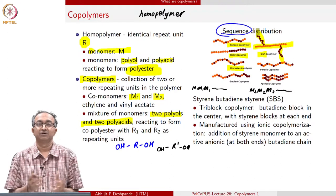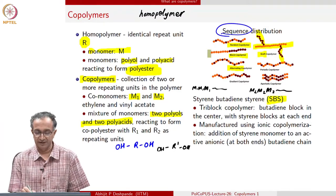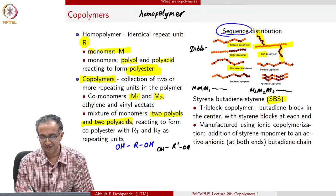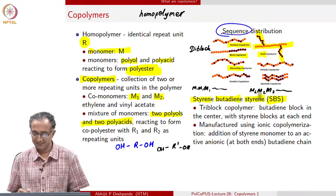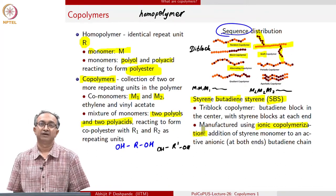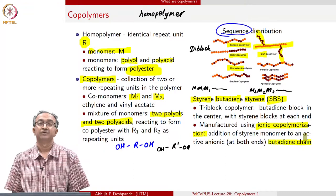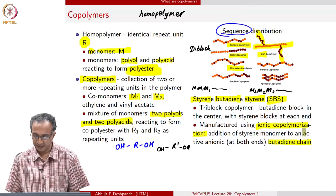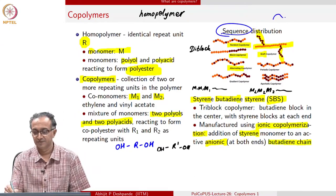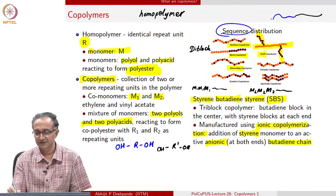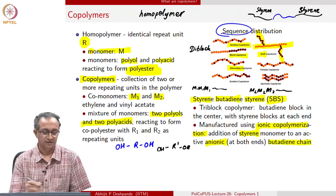One commercial example is a tri-block copolymer. What is shown here is a di-block copolymer because there are two blocks. But we also have a tri-block copolymer where there is a styrene block, then a butadiene block, and another styrene block. This is synthesized using ionic copolymerization, which we already looked at during our sixth and ninth lectures on polymerization. First we grow a butadiene chain — both ends have an anionic group — and that anionic group can be used by styrene to start polymerization. So we get styrene on one side, styrene on the other, and butadiene in between.